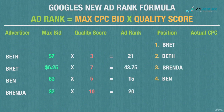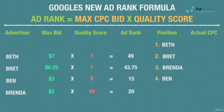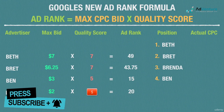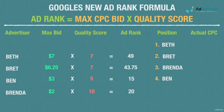This helps us understand how crucial quality scores are, even before getting into the formula for determining actual CPC. If Beth went to work on her quality score by rewriting her ads and building a more relevant landing page, and got her quality score up to a 7, her ad rank would be 49 and she would win the top spot from Brett without increasing her bid at all. And if Brenda let her quality score slip from 10 to 5, her ad rank would drop to 10 and she'd lose her spot to Ben. Position is very closely tied to how Google perceives the quality of the ad you're offering.